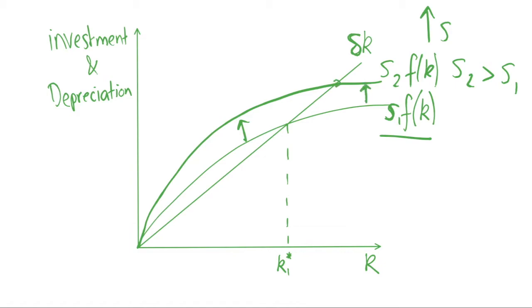And we see that we have a new steady state where investment equals depreciation here. So we get a new steady state k2 star which is higher.